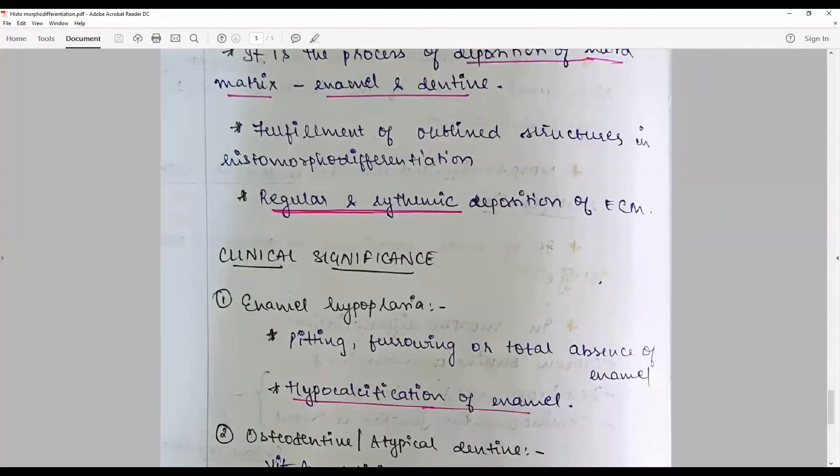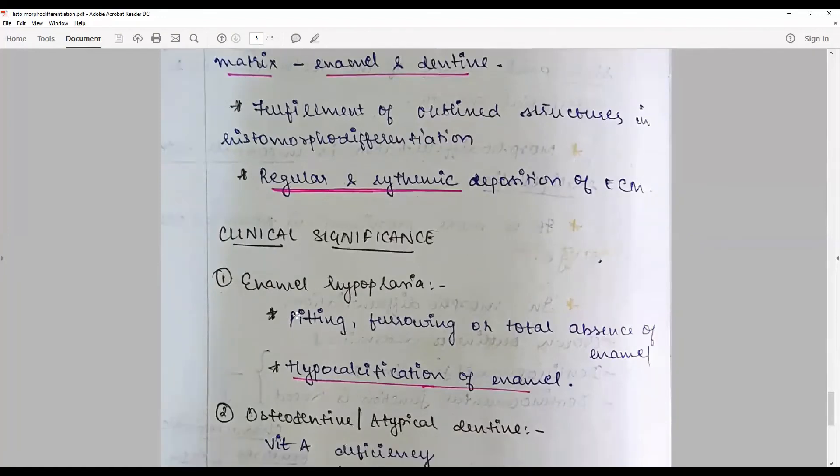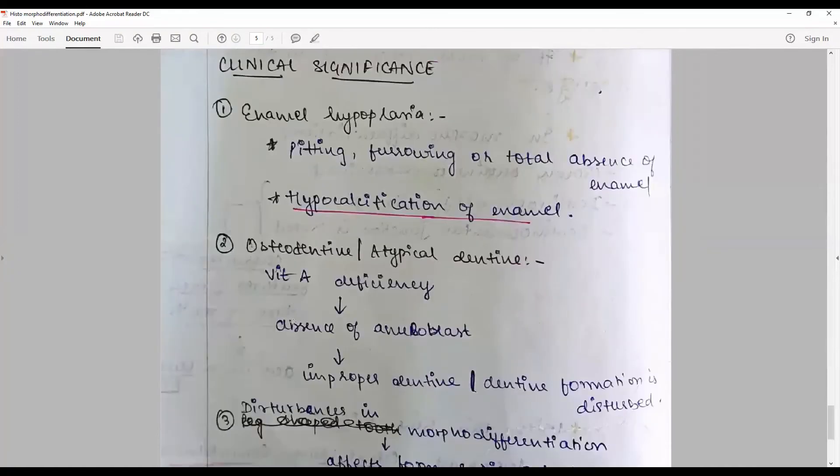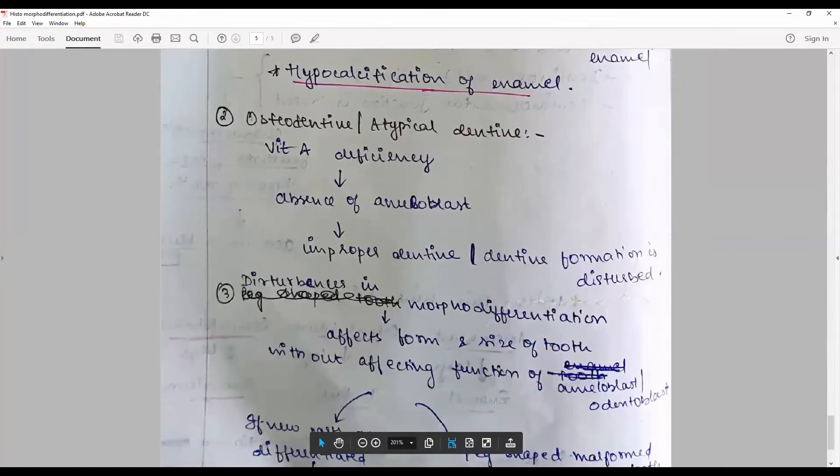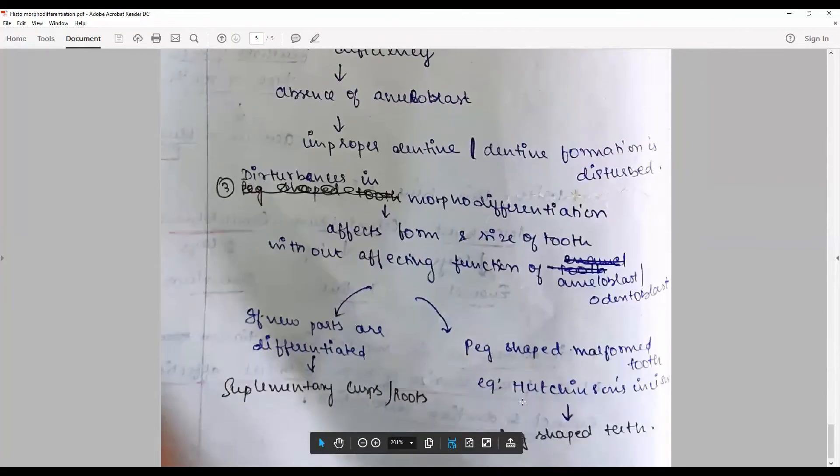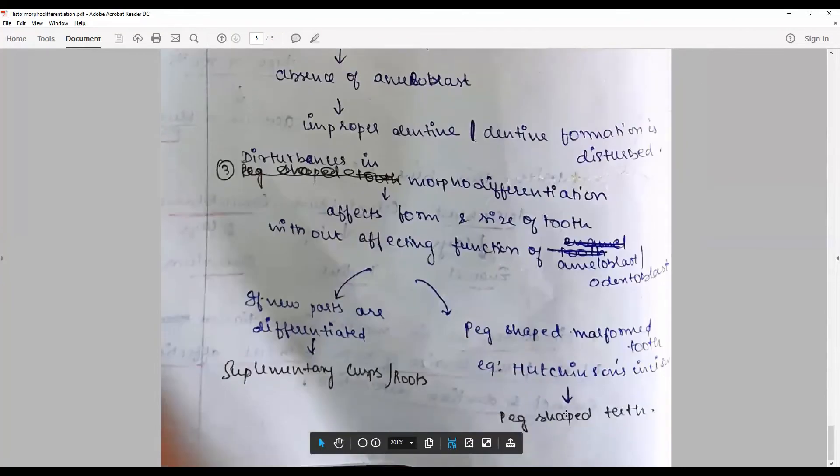The clinical significance includes enamel hypoplasia, amelogenesis imperfecta, osteogenesis imperfecta, disturbance in morpho-differentiation affecting form and size of tooth, supplementary root, dilaceration, and abnormal shaped tooth—all can happen in this stage.